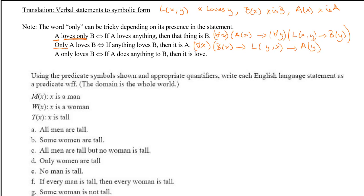To clarify: if anything loves B, then it must be A. The third case, 'A only loves B,' means if A does anything to something then it is love — interpreted differently. We translate this as: for all x, A(x) implies for all y, implies L(x,y). So 'only' here restricts A's actions to loving B.